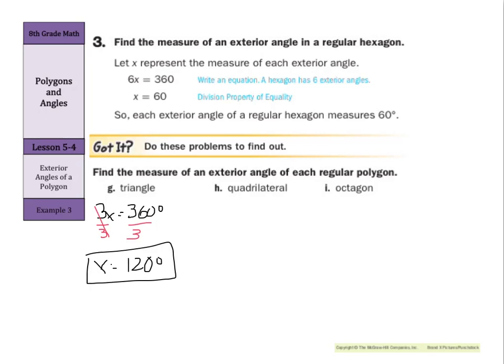What about our quadrilateral? Well, we have four exterior angles in the quadrilateral. They're going to add up to be 360 degrees. So if I once again divide by 4 on both sides here, x is going to equal 90 degrees.